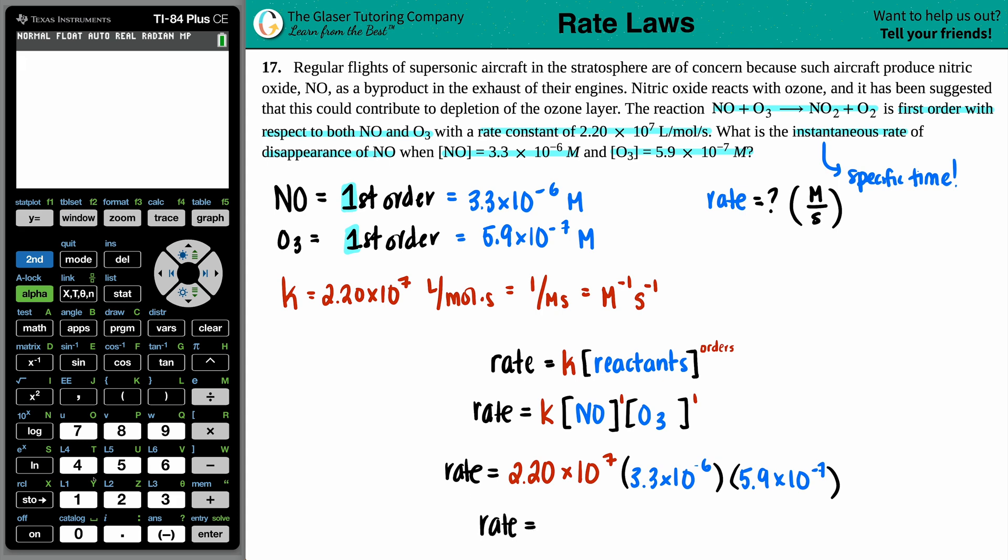So let's do it. We got the rate constant, which is 2.20 times 10 to the seventh. Then we have the two concentrations. They're both raised to the first. The NO is 3.3 times 10 to the negative sixth, and the O3 is 5.9 times 10 to the negative seventh. Now all we got to do is plug it in. Going to calculator: 2.20 times 10 to the seventh times 3.3 times 10 to the negative sixth, multiplied by 5.9 times 10 to the negative seventh. Lowest sig figs, it seems like we got two going on here. So I'll give it back in two sig figs: 4.3 times 10 to the negative fifth. That's the instantaneous rate, and it's molarity per second. That is it. That's the answer.